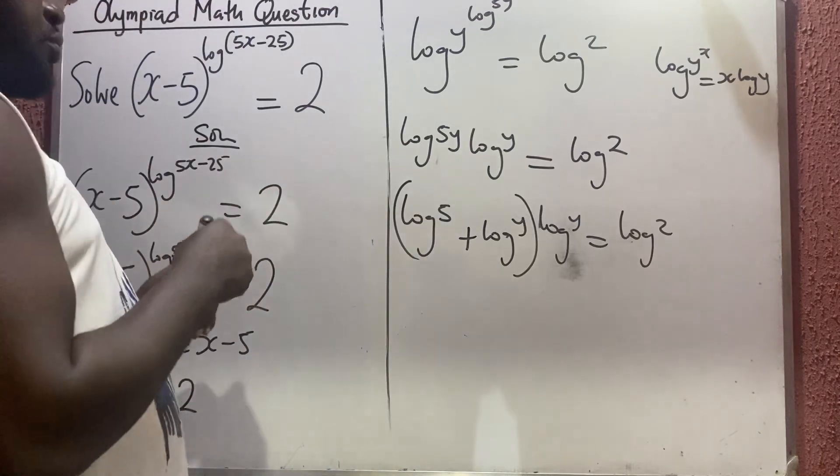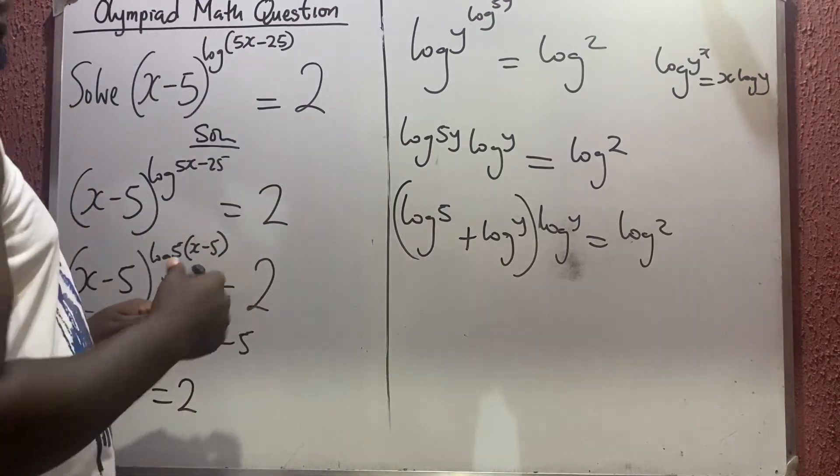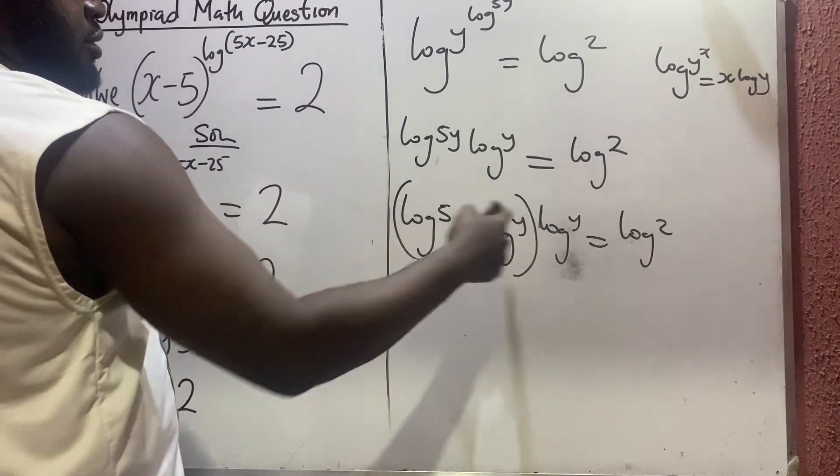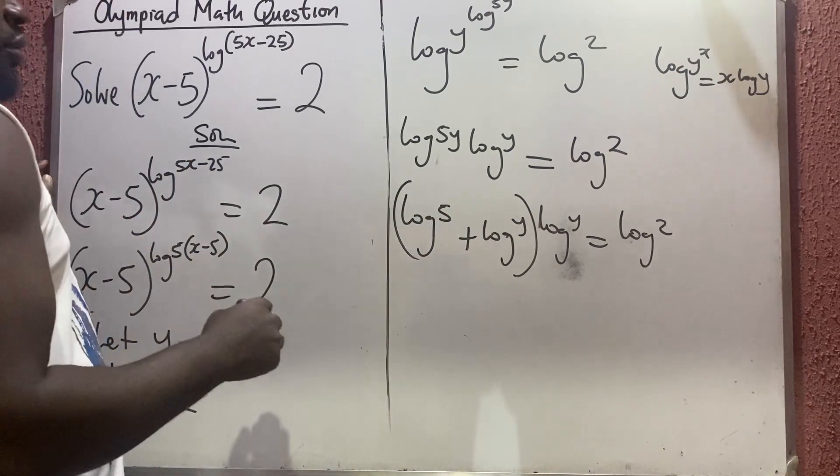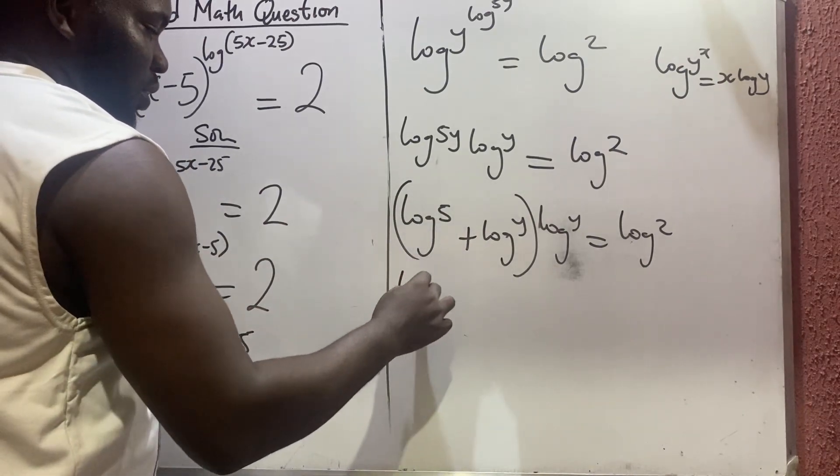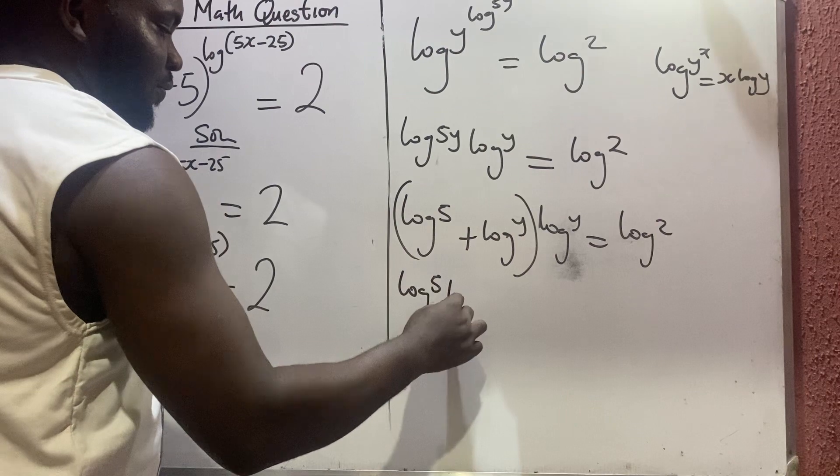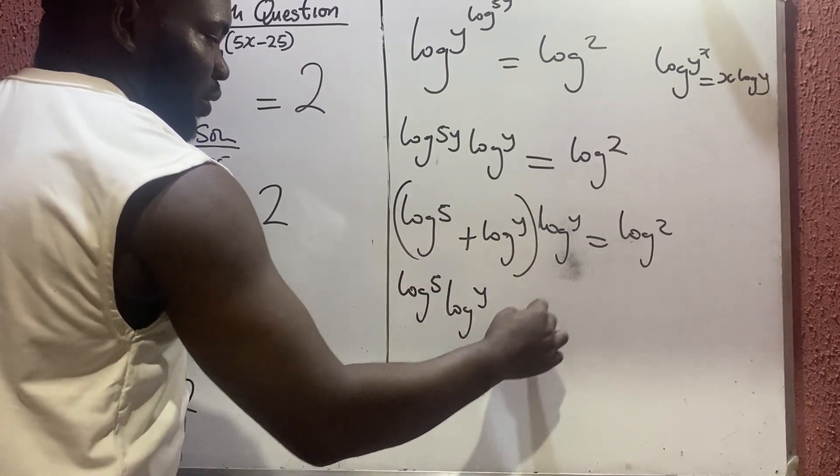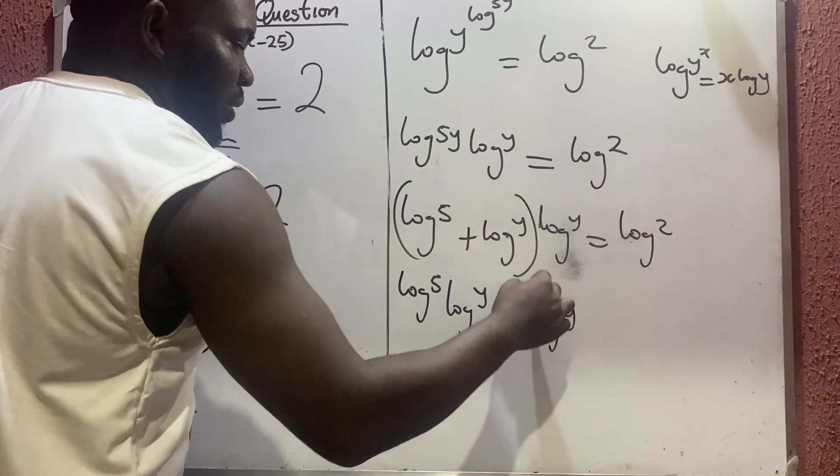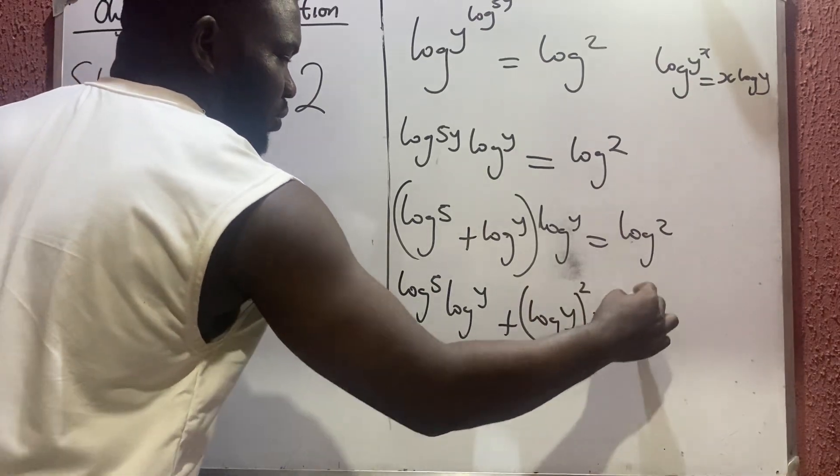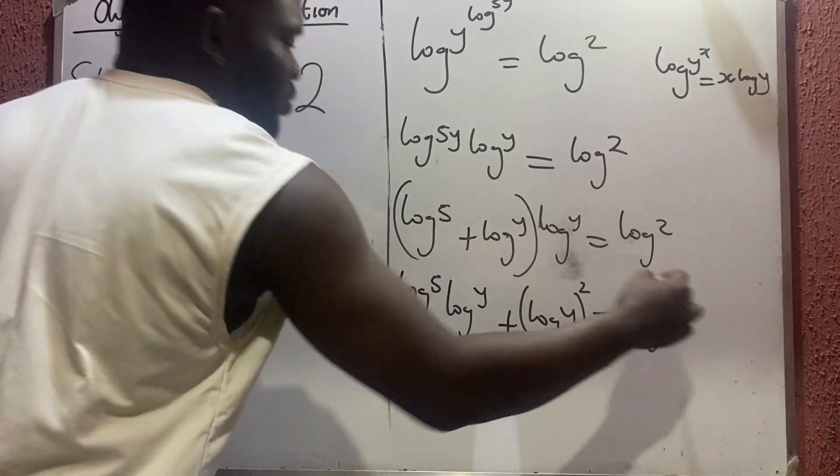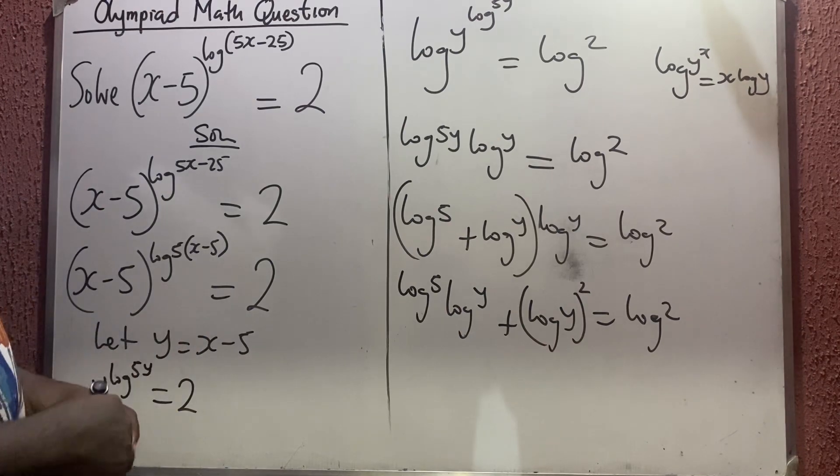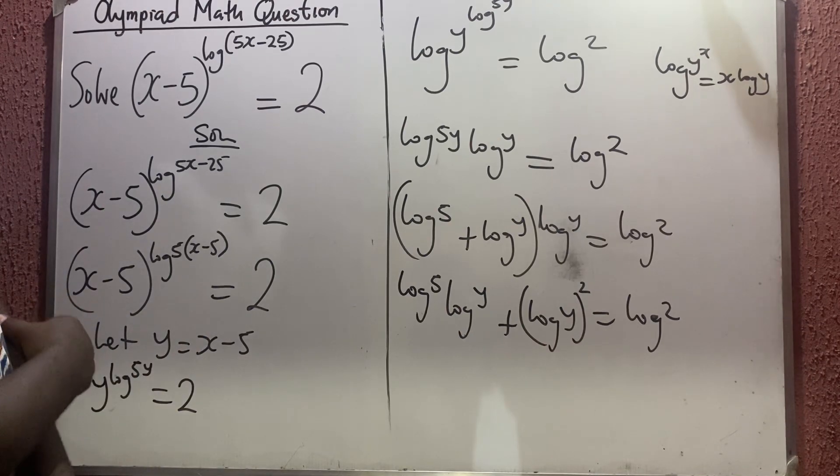So now let me clear the brackets. This is going to be log 5 times log y plus log y all squared equals log 2.